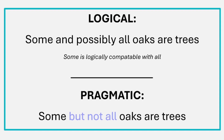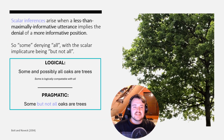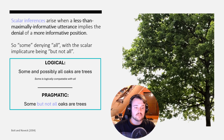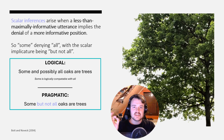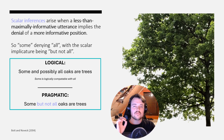Now the main gist: that 'but not all' part — marked in that purplish blue color — that is the scalar inference. That part implies the denial of the more informative position. It implies the denial of 'all,' because 'all' is the more informative position relative to 'some.' To repeat for clarity: 'Some, but not all oaks are trees.' That 'but not all' part is the scalar implicature or scalar inference — the extra inference you make that denies the more informative position, in this case denying that all oaks are trees.